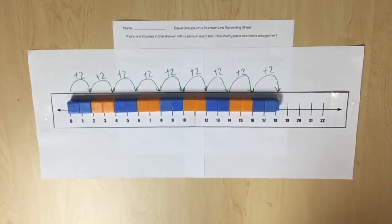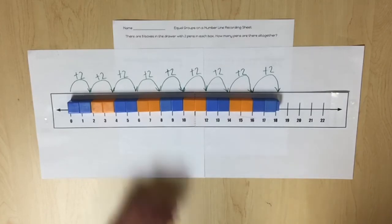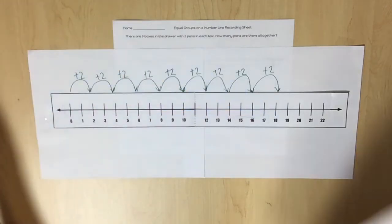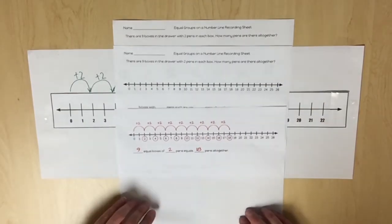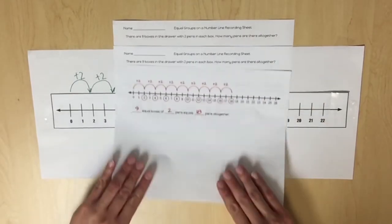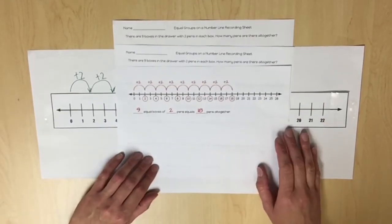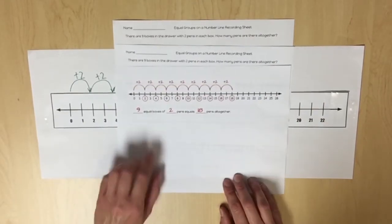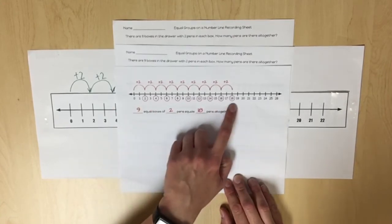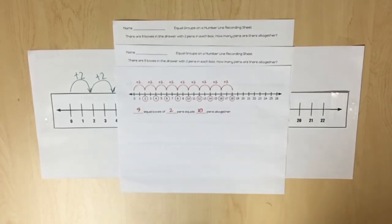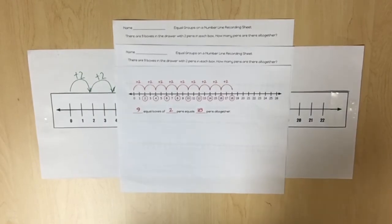Finally, students should create a pictorial representation of the equal groups they joined. Students should label the repeated addition with each jump and circle the numbers as they skip count to find the total.